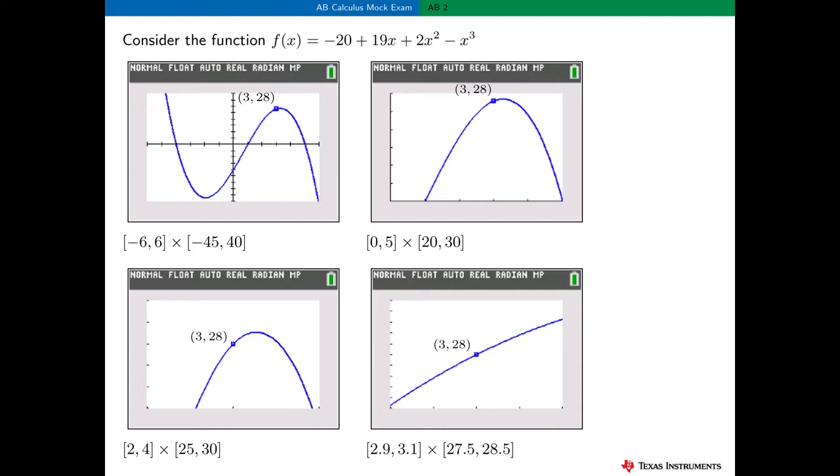Let's try to use technology to visualize this property geometrically. Consider the function f, defined here. It's a third-degree polynomial. Since f is a polynomial, it's differentiable everywhere. These figures show the graph of f as we zoom in near the point (3, 28). Here's the graph of f in the viewing window -6 to 6 by -45 to 40. This graph exhibits the characteristics we expect of a third-degree polynomial, but it really doesn't look linear near the point (3, 28).